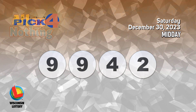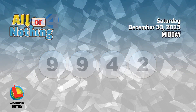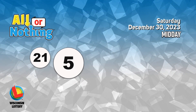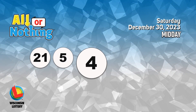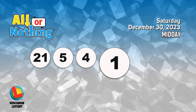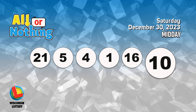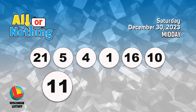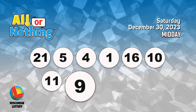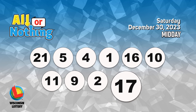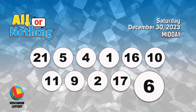The all or nothing numbers are twenty-one, five, four, one, sixteen, ten, eleven, nine, two, seventeen, six.